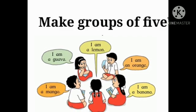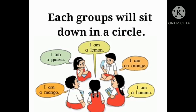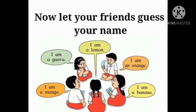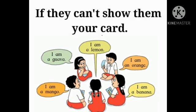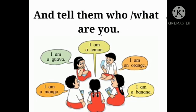Make groups of five. આતા પાચ પाच જनांचे ग्रुप करा. Each group will sit down in a circle. प्रत्येक गट गोल करून बसेल. Now let your friends guess your name. आता तुमच्या मित्रांना तुमचे नाव ओळखू द्या. If they can't, show them your card. तर तुमचे कार्ड त्यांना दाखवा. And tell them who, what are you. आणि तुम्ही त्यांना कोण काय आहात ते सांगा.